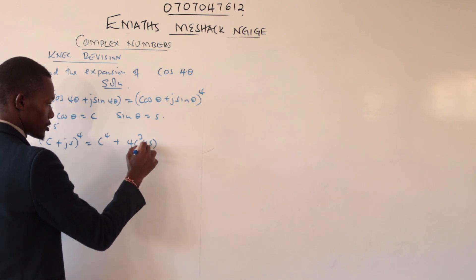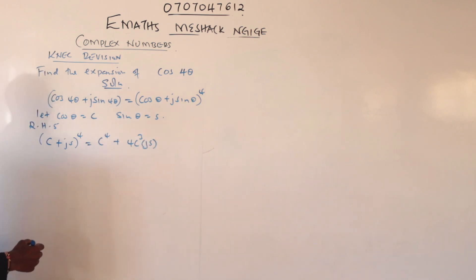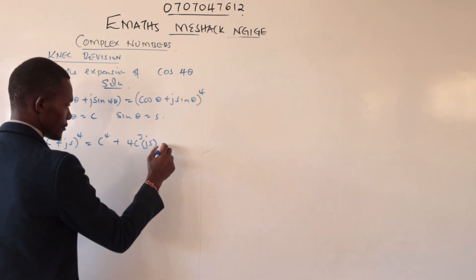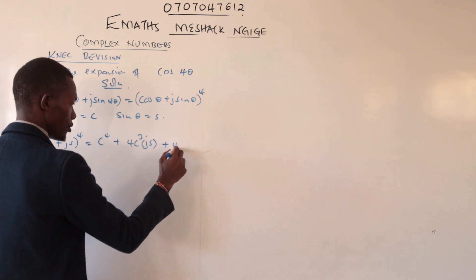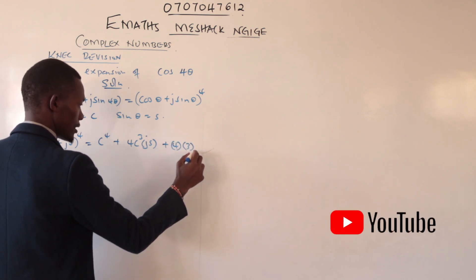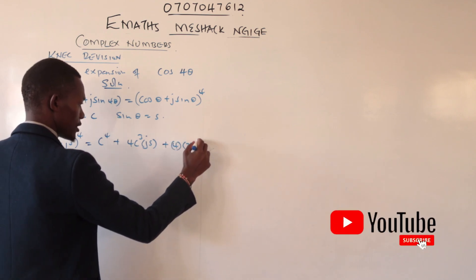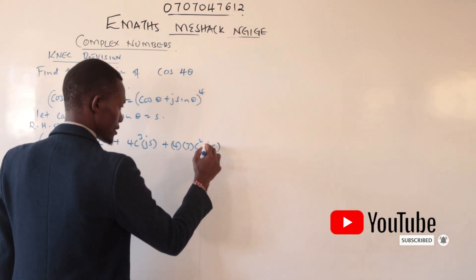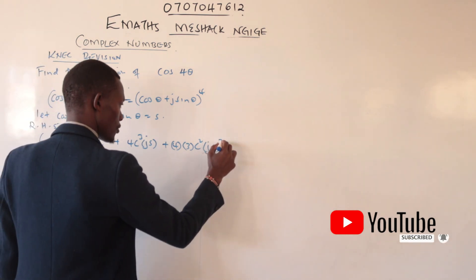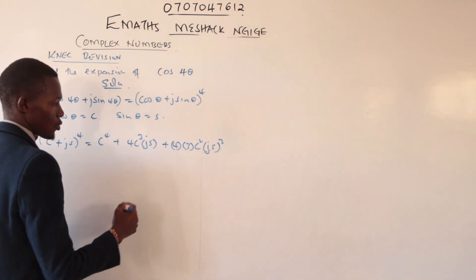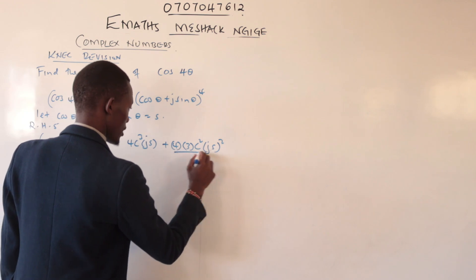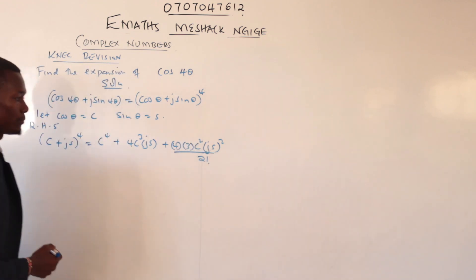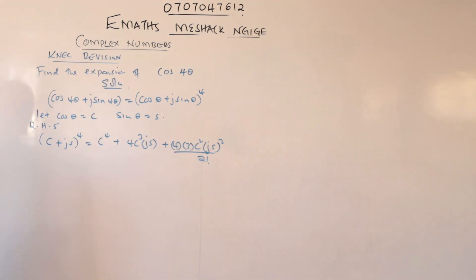Then introduce j, introduce js. We have 4, drop the power to 3, then c squared, then js squared, all over 2 factorial.